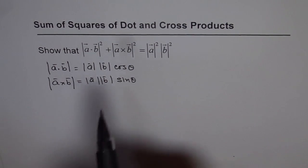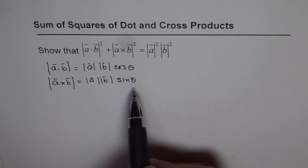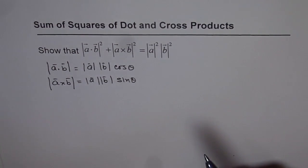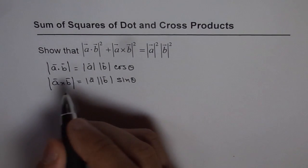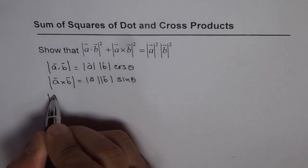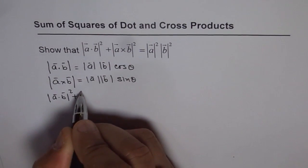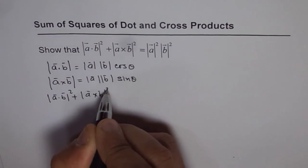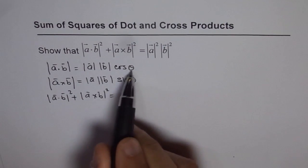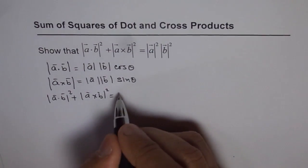Now from here, what we need to do is square them and add them to get the answer. So what is A dot B whole square plus A cross B whole square equals to? So square of these, this is what it equals to.